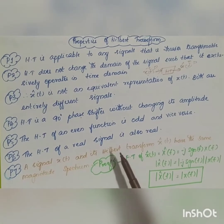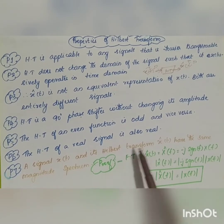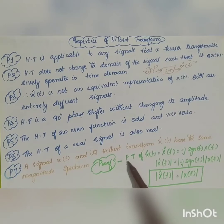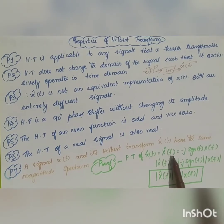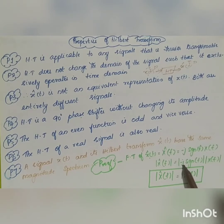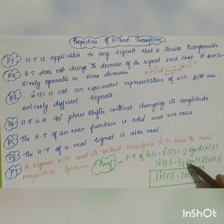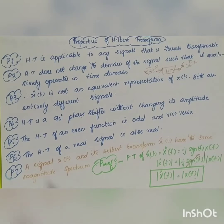The seventh property is that a signal x(t) and its Hilbert transform x̂(t) have the same magnitude spectrum — the magnitude of X(f) and X̂(f) are equal. For the proof: taking the Fourier transform of x̂(t), we know from the last video that X̂(f) = -j·sgn(f)·X(f). Taking the magnitude, |−j·sgn(f)| = 1, so |X̂(f)| = |X(f)|. Both magnitudes are equal.